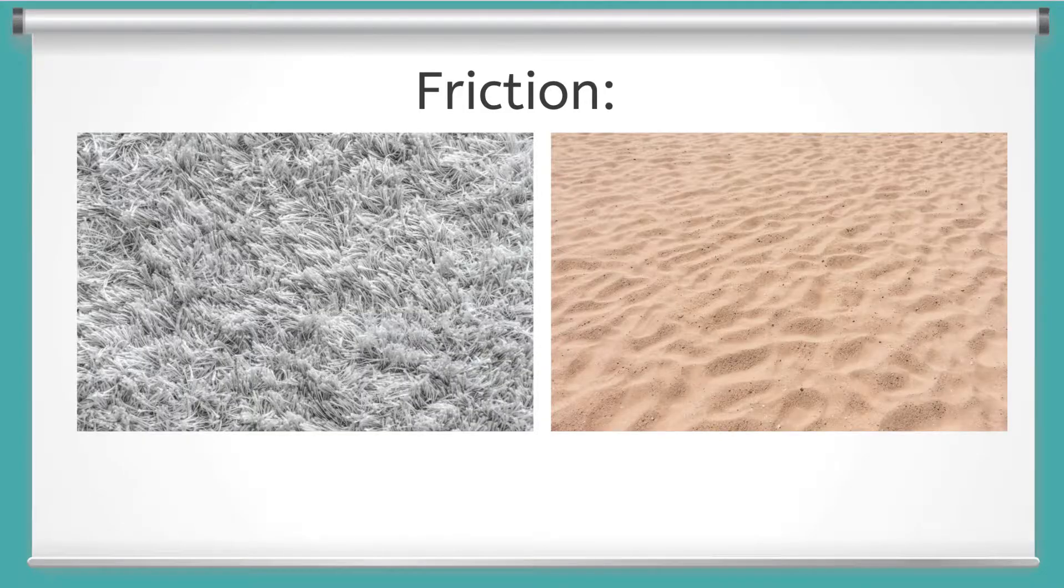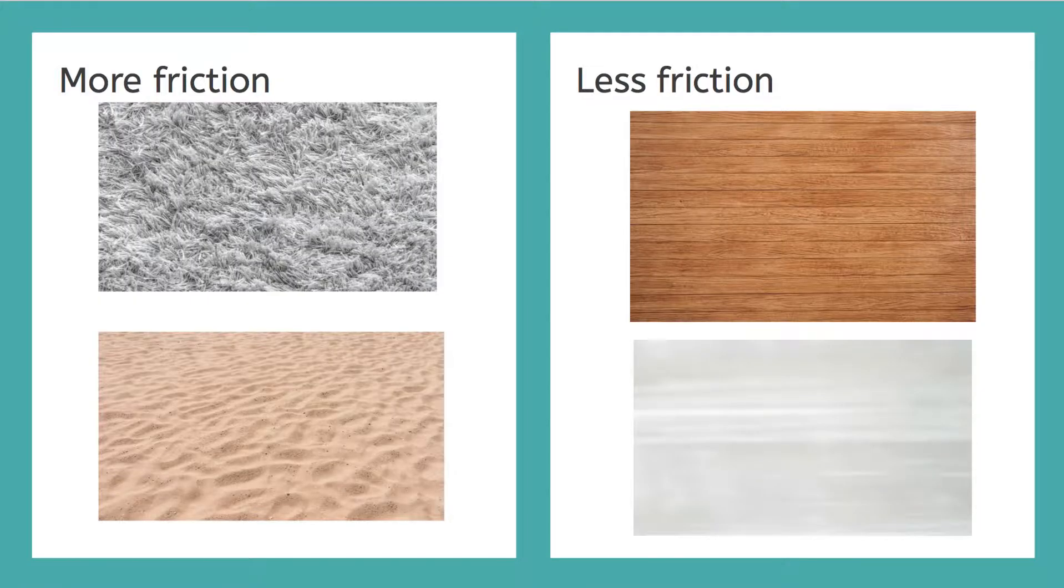Let's start off by talking about friction. Remember, friction is a force that tries to stop motion. And there are different surfaces that can have more friction, like thick rugs and sand, and surfaces like shiny wood floors and ice skating rinks that have less friction. And we can use mathematical equations to see what this actually means.